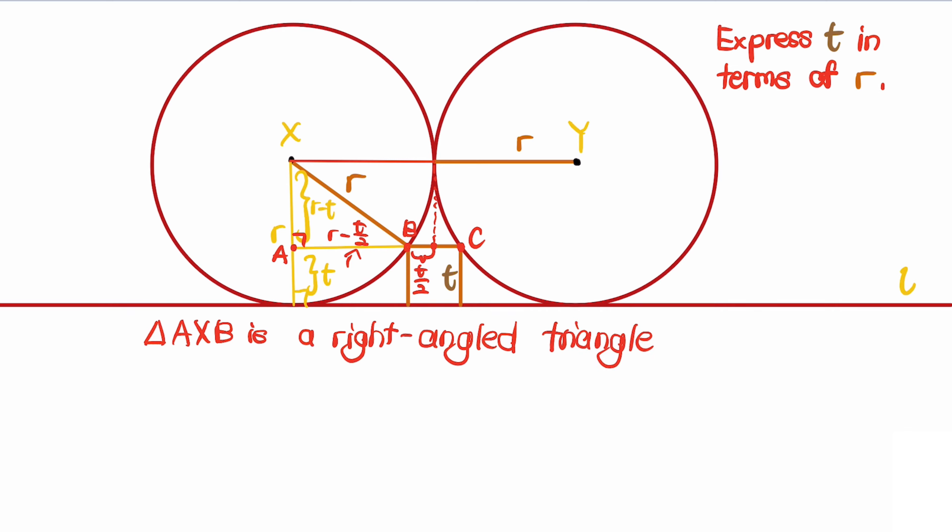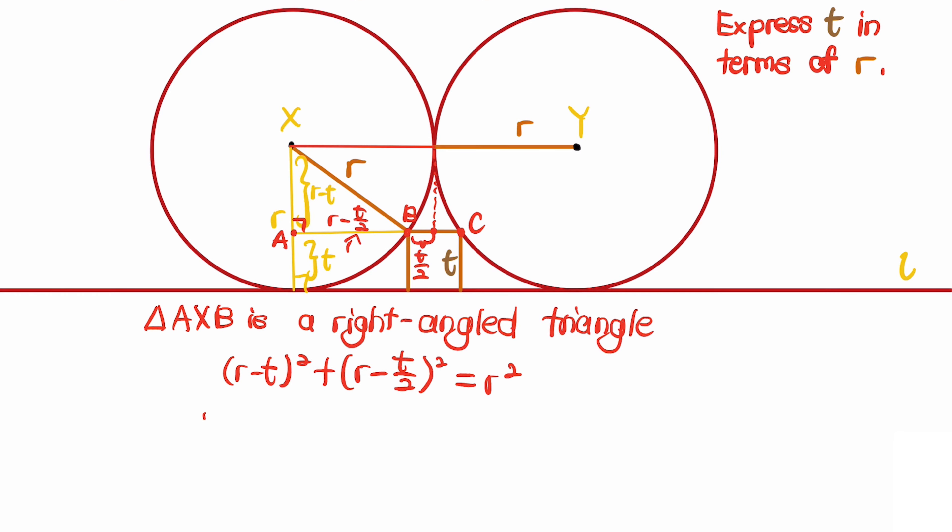So we can apply the Pythagorean theorem, which states that (r - t)² plus ((r - t)/2)² equals r². Expanding this out, we get r² minus 2rt plus t² plus r² minus rt plus t² divided by 4 equals r².